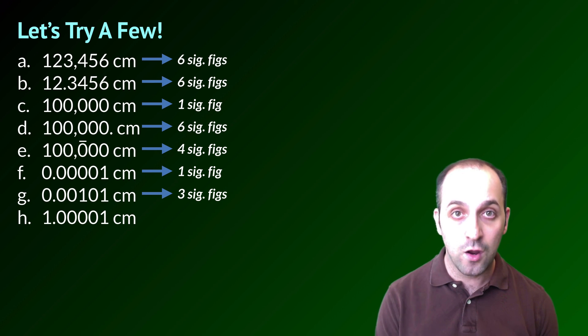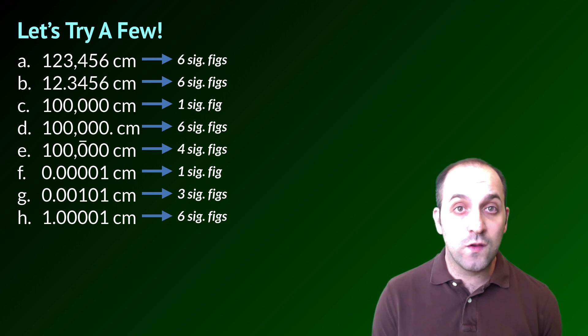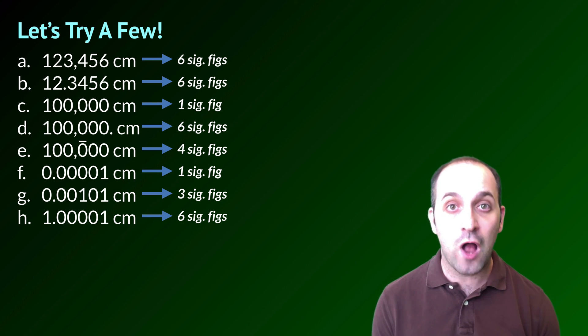H has six significant figures for the same reason. All of those zeros between those two ones would not be written down if we did not know them with certainty. The fact that we do know them with certainty is the only reason that they're on that page.